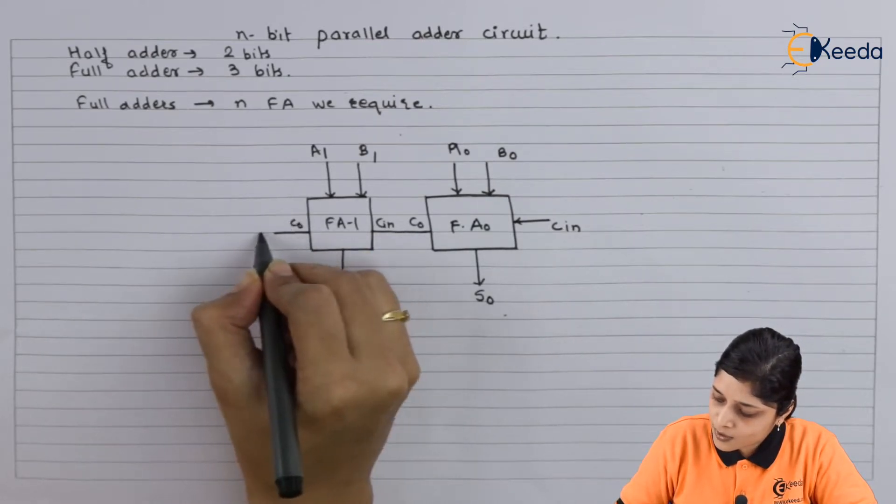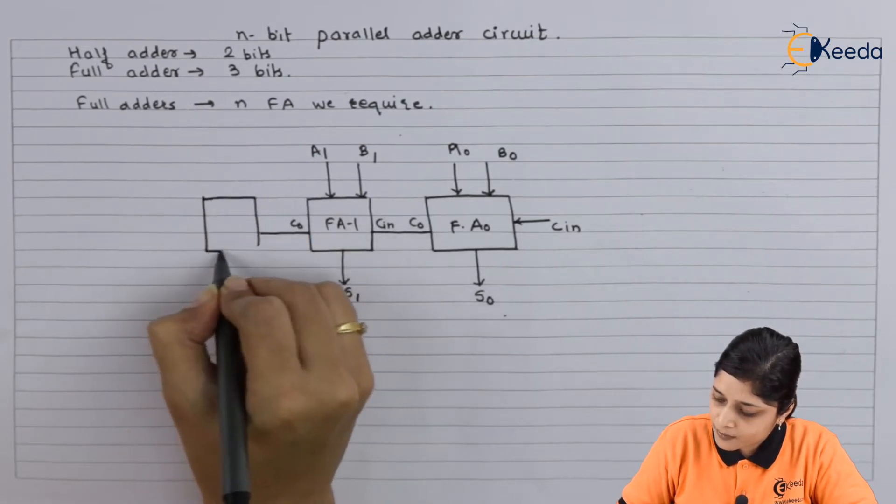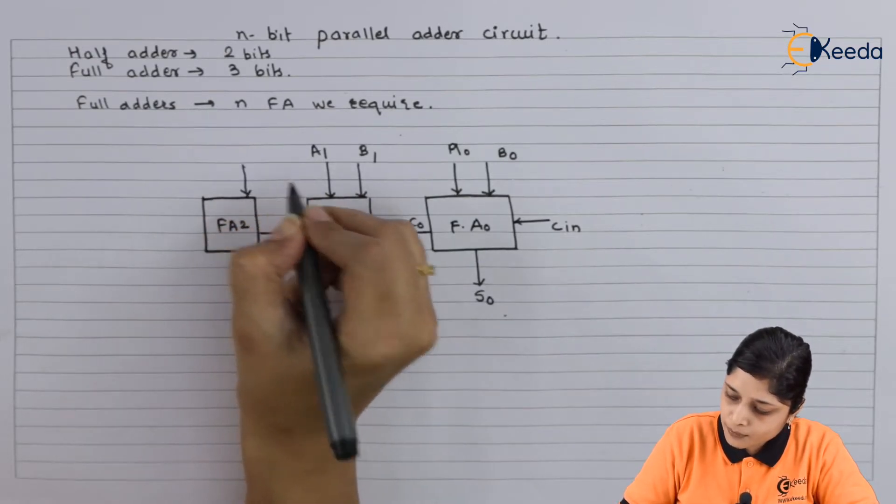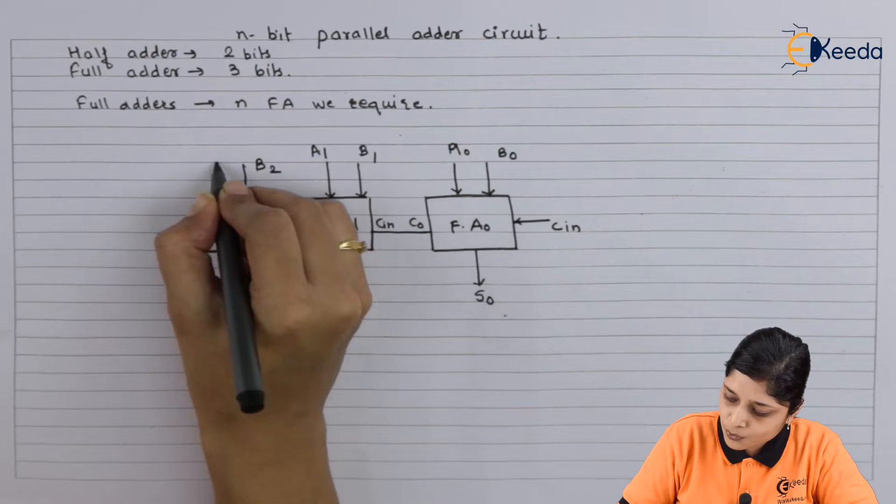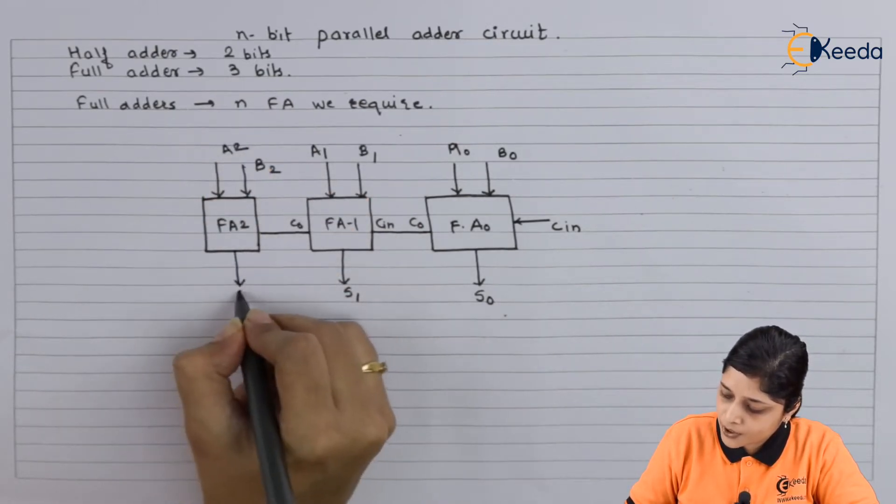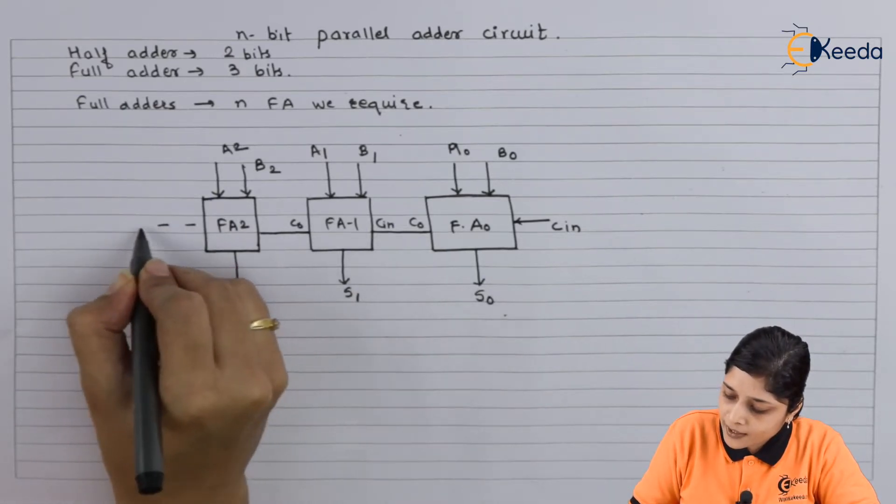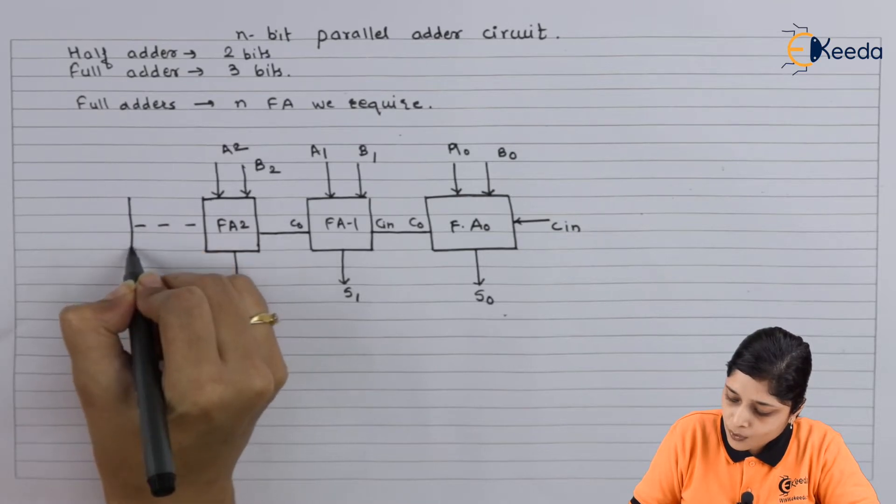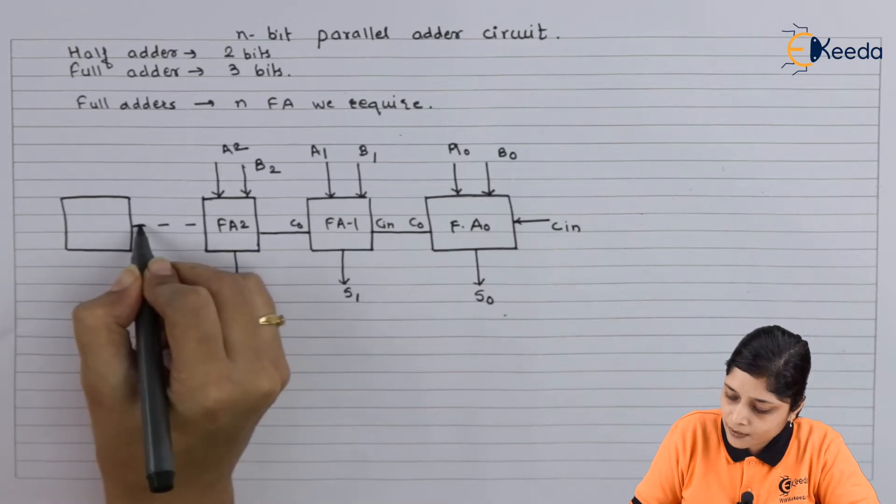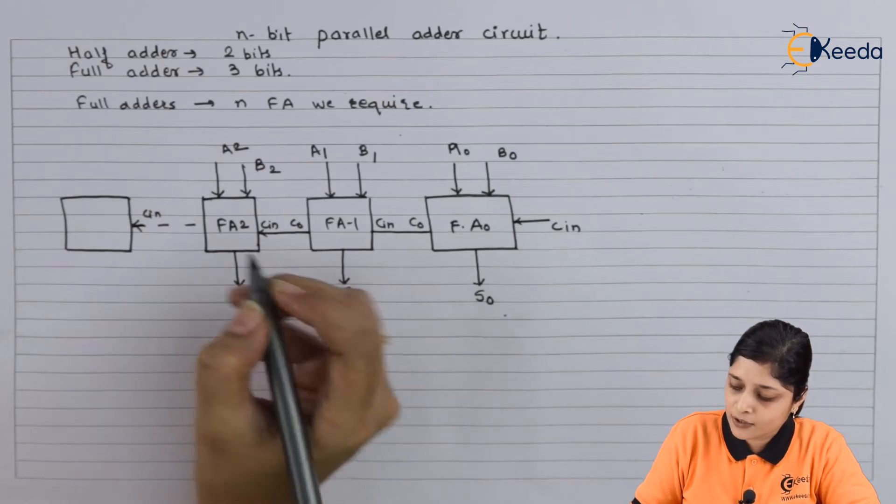Here also C0 becomes C in for next full adder. Full adder 2, input bits are B2, A2, and output here is S2. Now we have n types of bits for addition, so finally you will write here, here also C out becomes C in for next full adder.